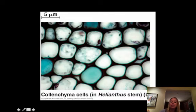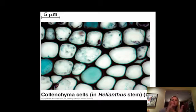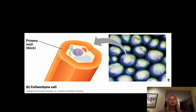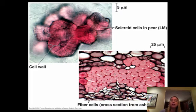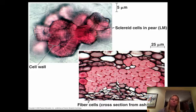Then you have colenchymal cells, which have cell walls that vary in thickness. The thicker parts allow the plant to grow pretty tall, while the thin parts allow some flexibility so it can bend in the breeze. After that, you have sclerenchymal cells with really, really thick cell walls, making the plant very rigid — think of a tree that doesn't bend much in the wind but can grow very large.